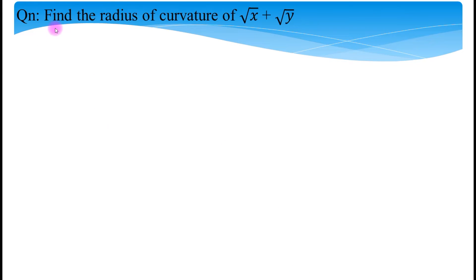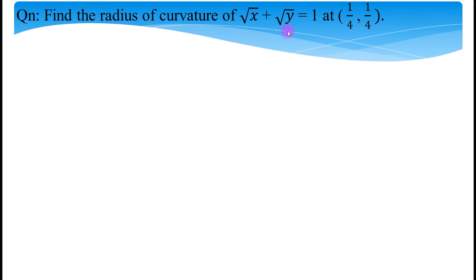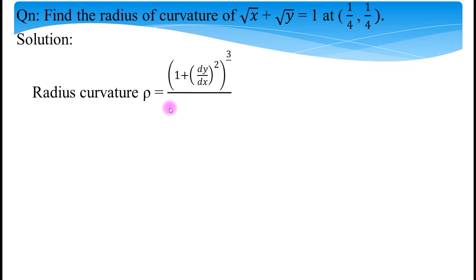Now I am going to solve one problem. The question is: find the radius of curvature of the equation √x + √y = 1 at the point (1/4, 1/4). The given equation is in Cartesian form, so first we have to write the formula for radius of curvature in Cartesian form.